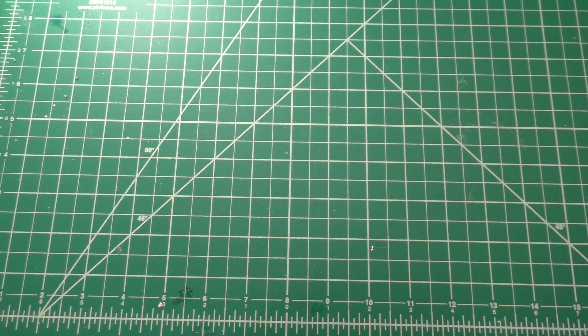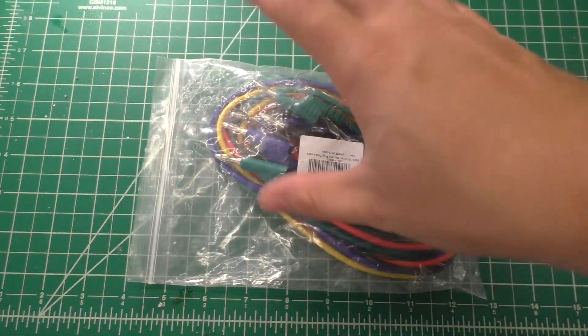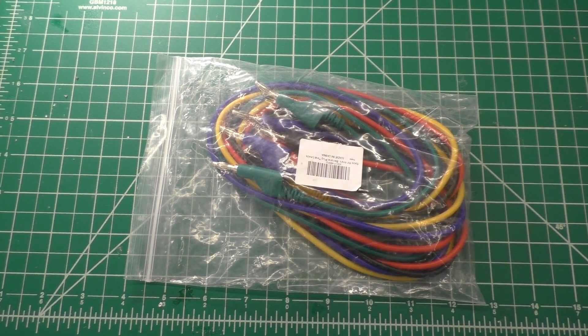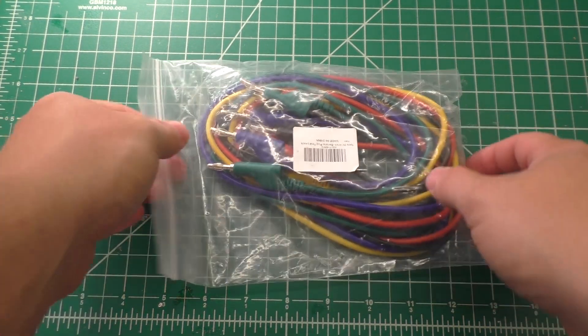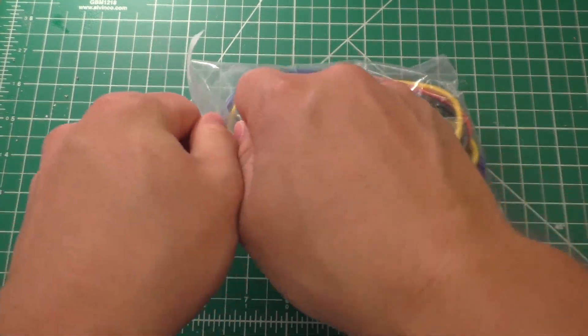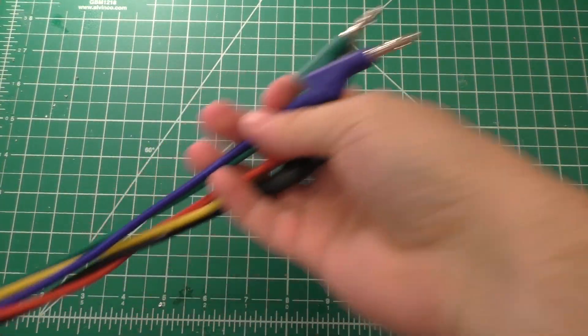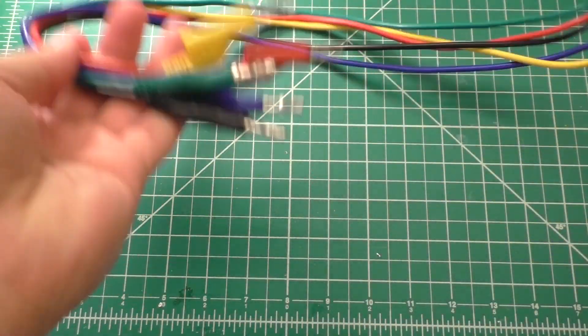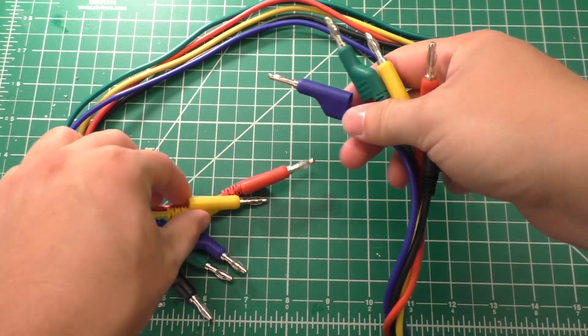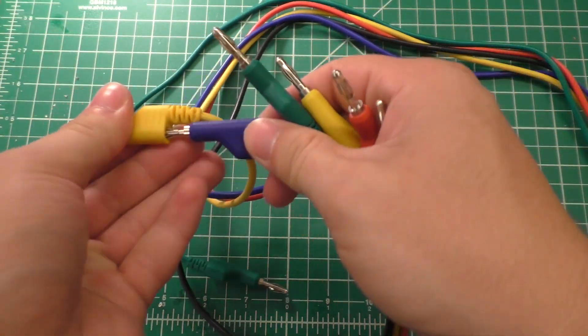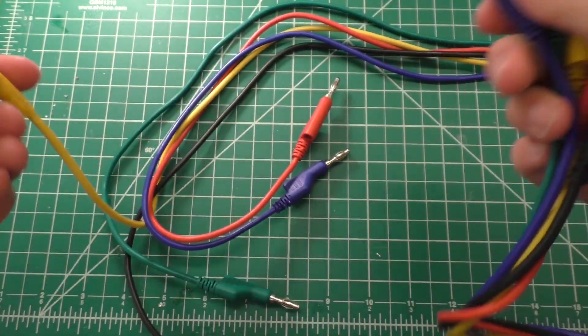Alright, so I thought it'd also be useful to have a set of banana leads because I don't actually have any kind of just banana-to-banana leads like this. So these are like one meter long banana leads, just male-to-male, and they're also the kind where you can stack them into each other like that.